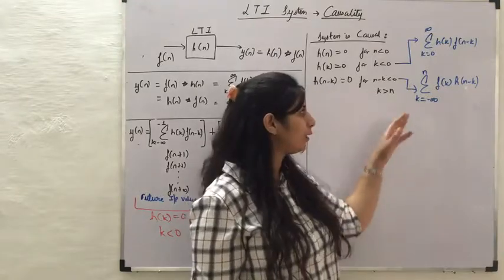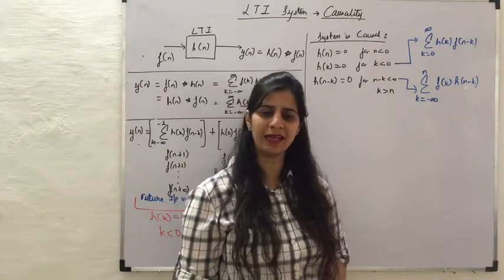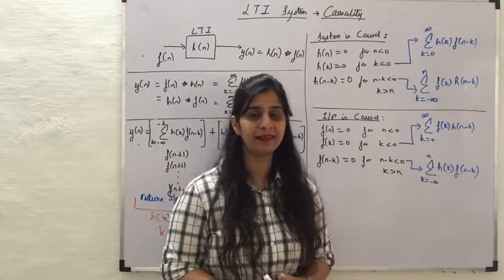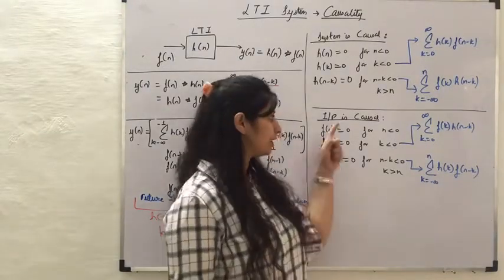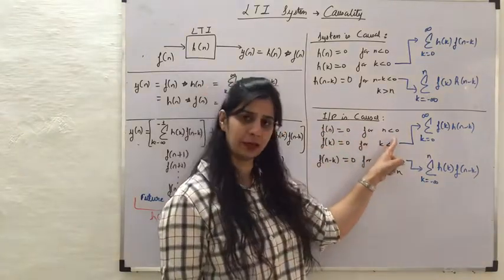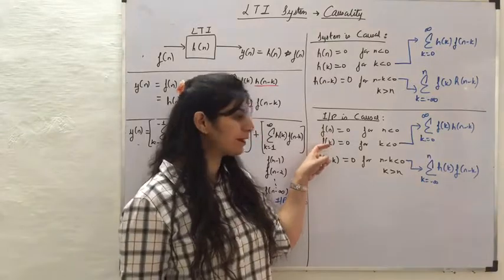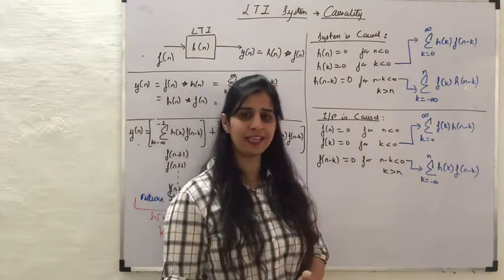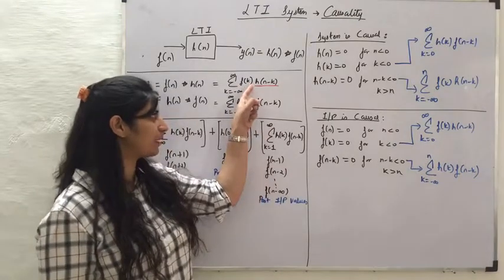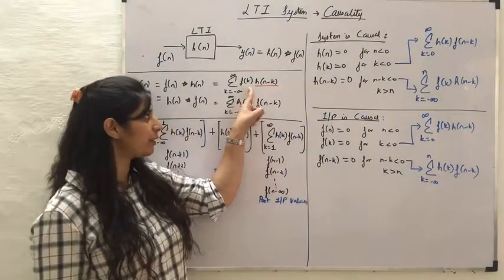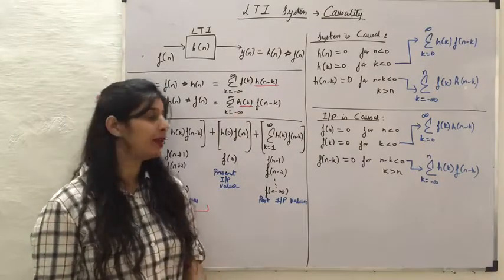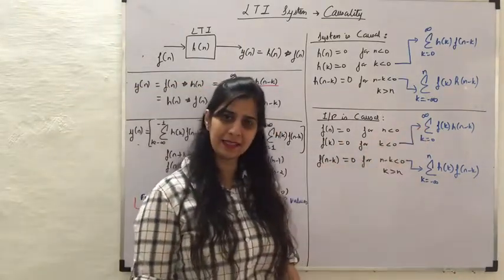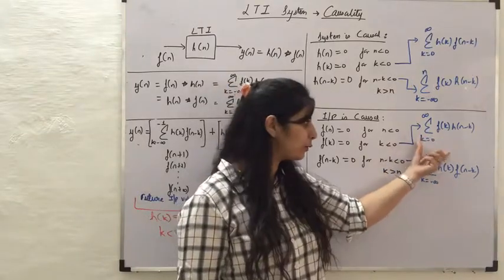Now let us look at how these expressions change when the input is causal. When the input is causal, the input signal will not have any future values, so it is defined as 0 for N less than 0, or equivalently F(K) equals 0 for K less than 0. In the convolution expression with F(K), since F(K) is 0 for K less than 0, the summation changes from 0 to infinity.